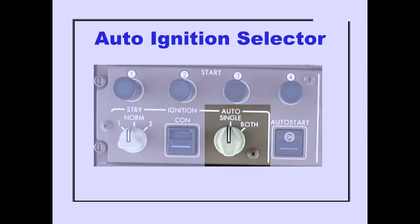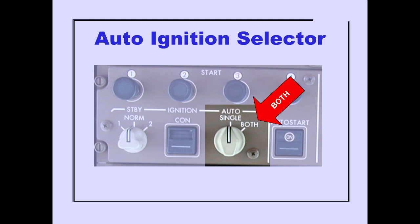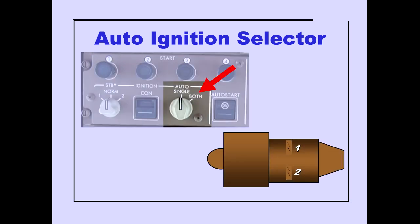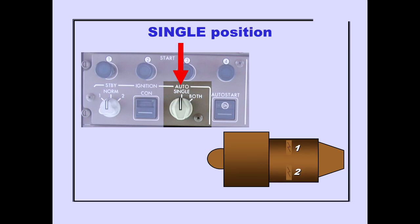The auto-ignition selector has two positions: single and both. The both position selects both igniters in each engine. The single position selects the individual igniter, and the electronic engine control automatically alternates between igniter 1 and igniter 2 for successive ground starts. It selects both igniters for in-flight starts.